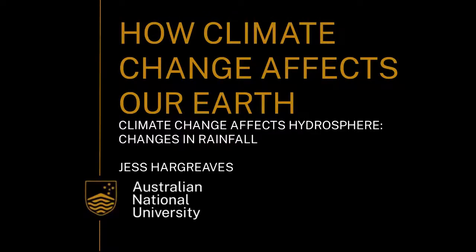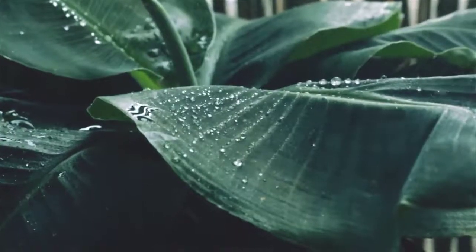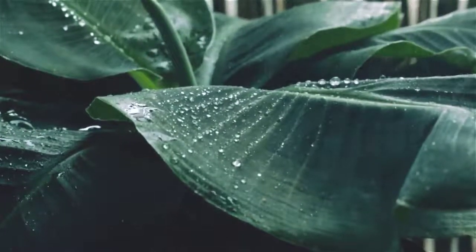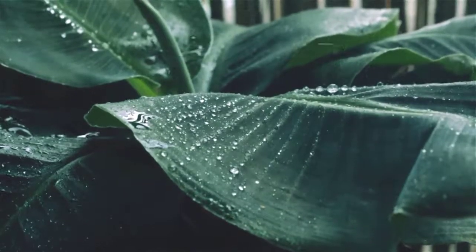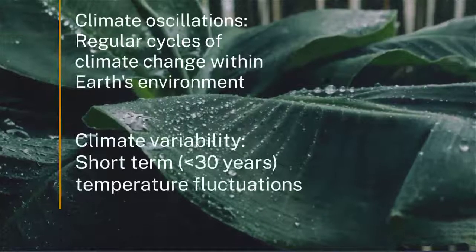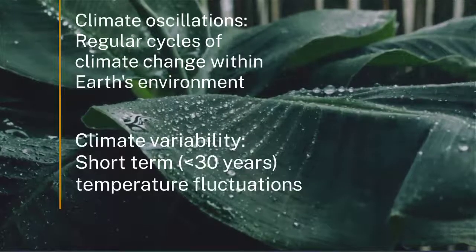I work with corals, using stable oxygen isotopes to figure out what the temperature was 200 years ago, 400 years ago, and even over the last thousand years. To do this we come up with a time series of oxygen isotopes and convert that into temperature and rainfall, which allows us to understand how climate oscillations and climate variability changed over the last thousand years.